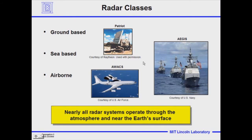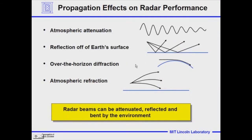It's everything between the target and the radar. This lecture will focus on what happens to the radar beam. There are really four things that happen to the radar beam — four propagation effects that make a difference in terms of the radar's performance.